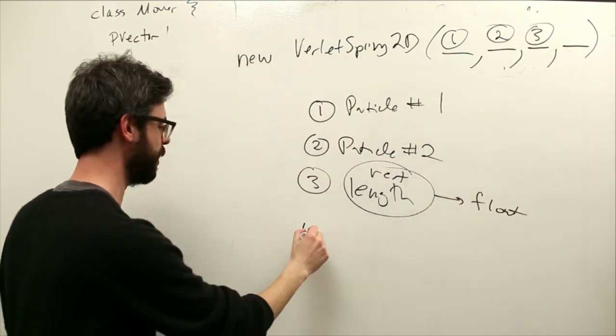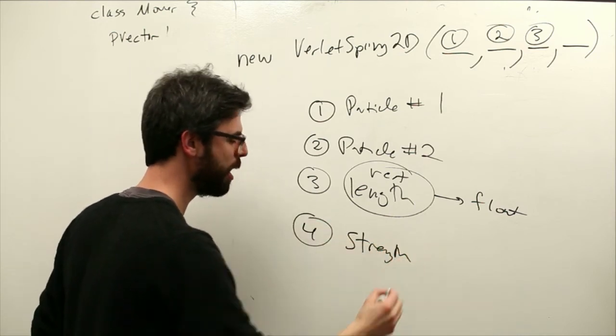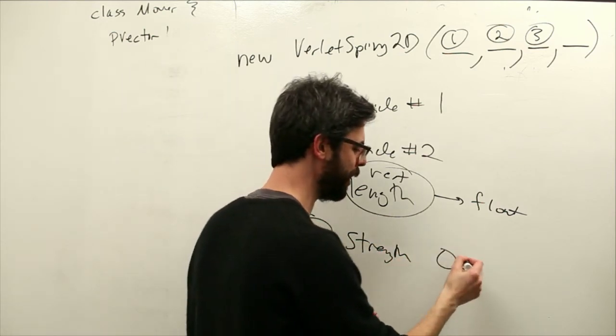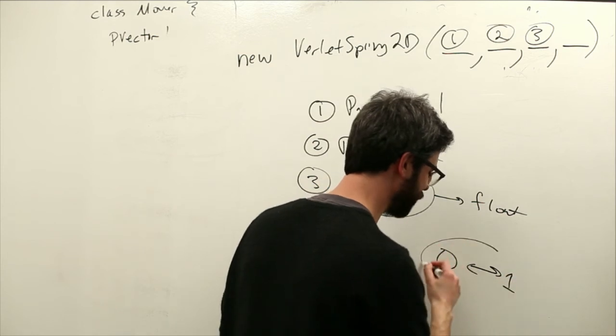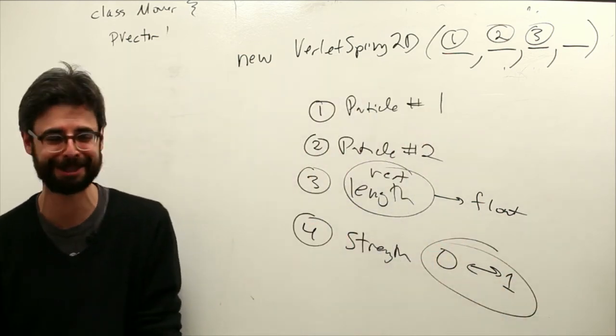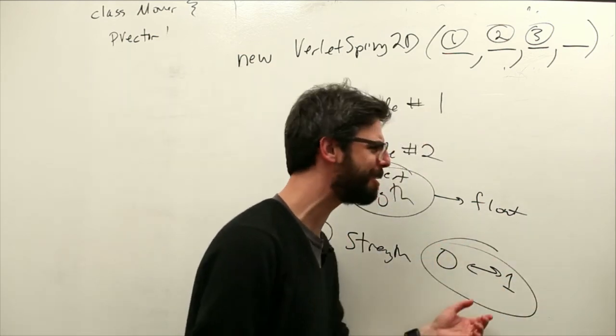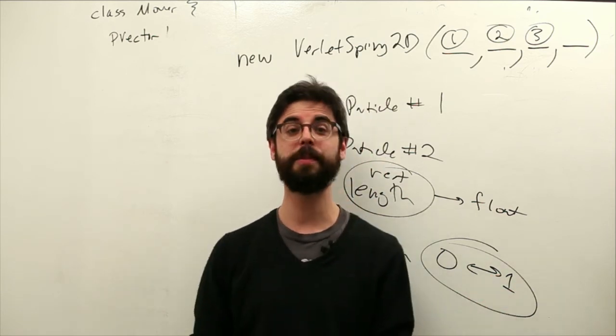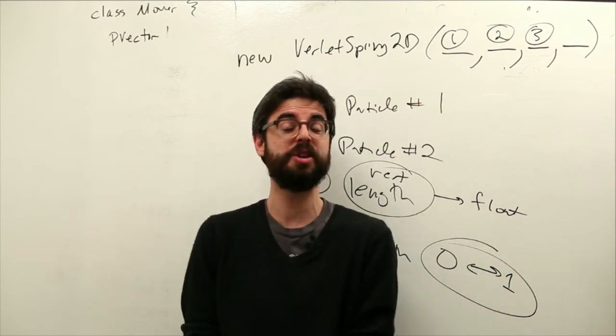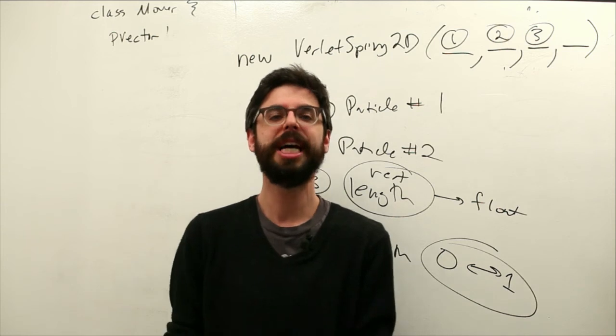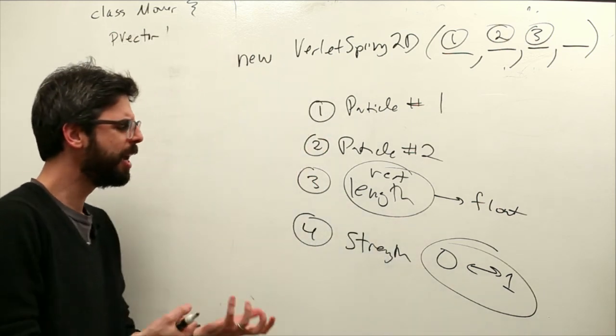And the fourth argument is the strength of the spring. And you can think of that as a number between zero and one. I really should have thought of this before I began this video. But I'm pretty sure if you make that number one, it's going to be completely rigid.